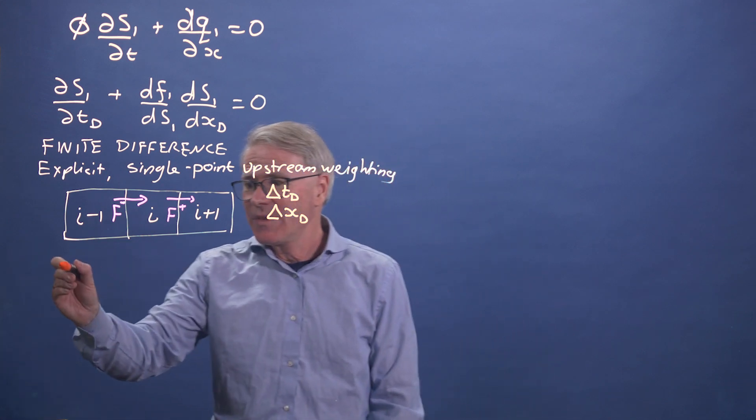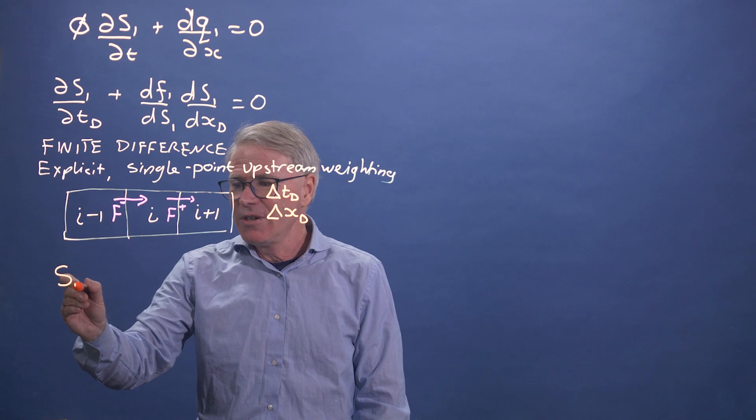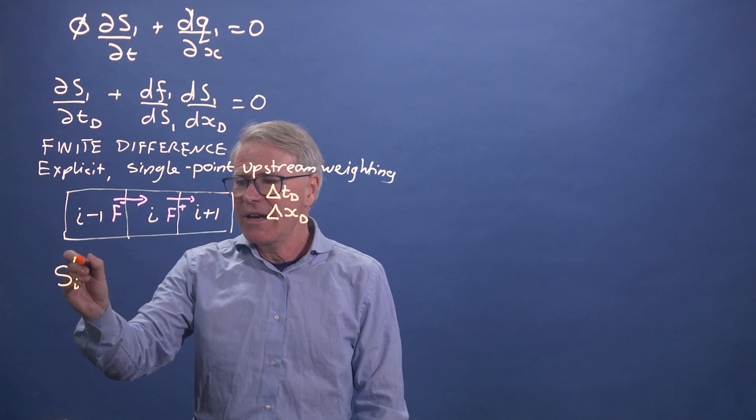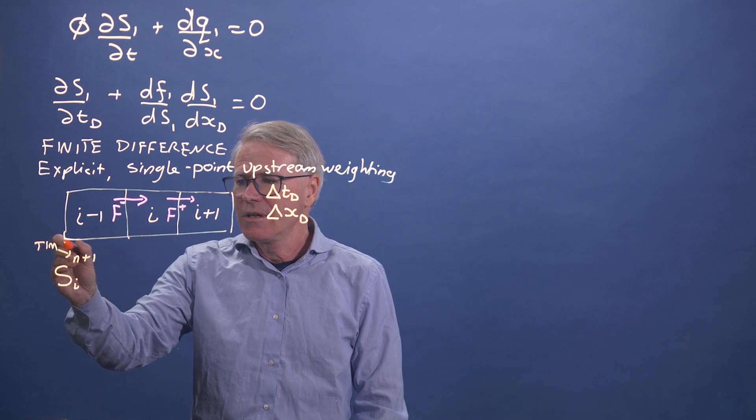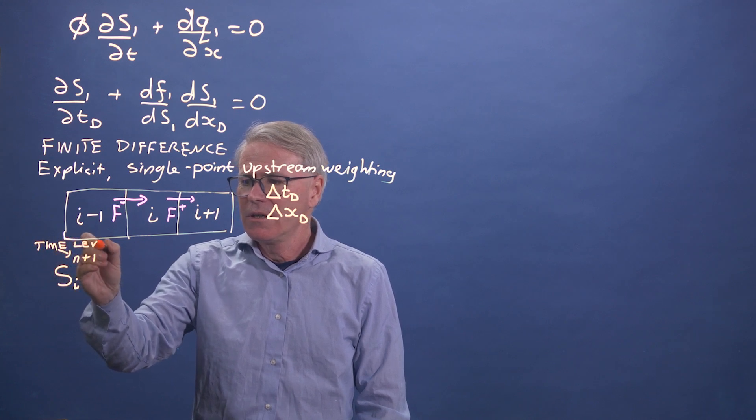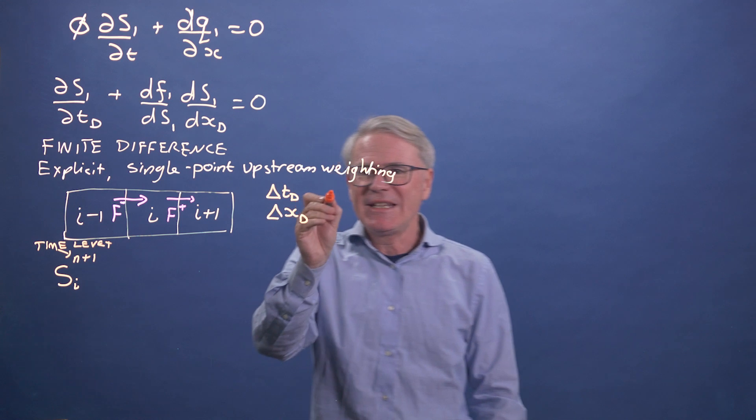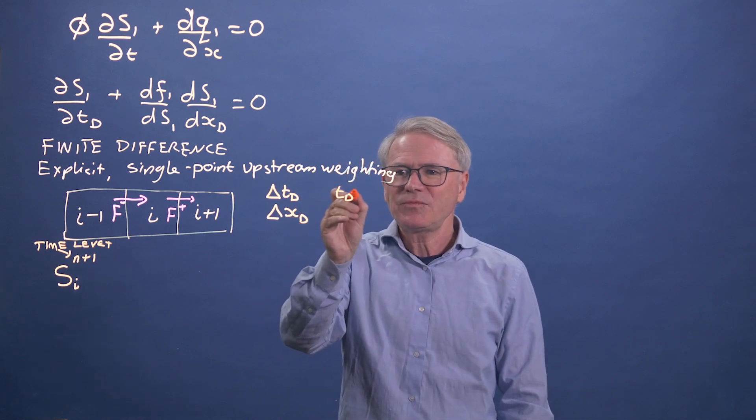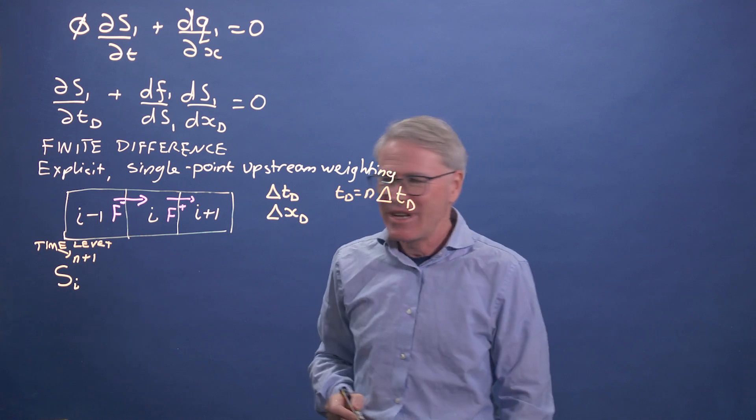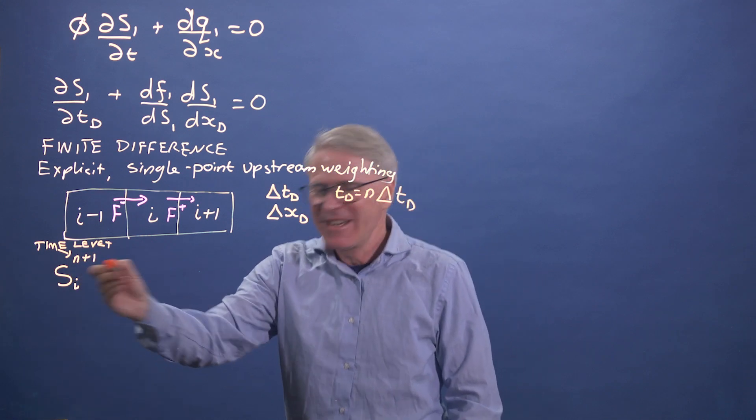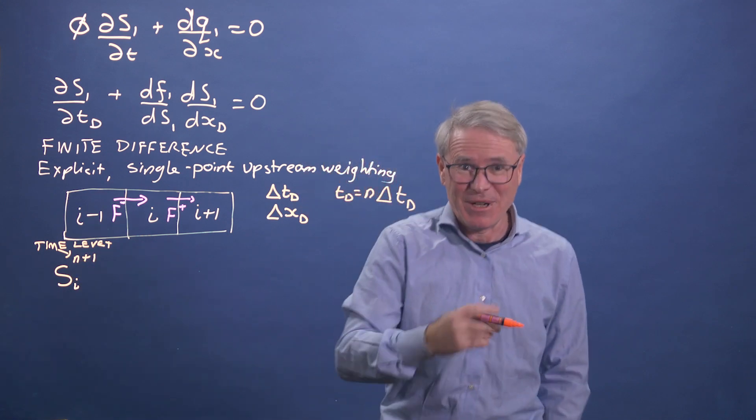The saturation in grid block i at time level, this is the time level. So Td is N times delta Td. So we have time increments and this is time level N. And then we move on to time level N plus one. So how do we update saturation?